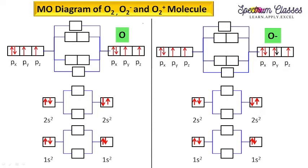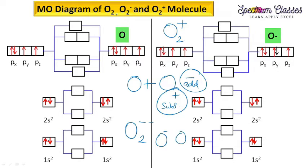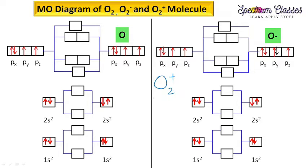Coming to O2 plus. If you are asked to write the electronic configuration for O2 plus, you simply write O plus O. If minus is there, add 1 electron; if plus is there, subtract 1 electron. For O2 double minus, that means O minus and O minus — so 8 plus 1 and 8 plus 1 gives 18 electrons total. For O2 plus, it is 8 plus 7, so total 15 electrons.